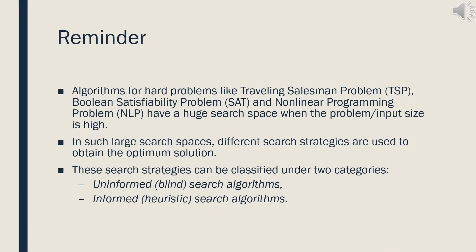Let's first remember what we have seen about heuristic algorithms. Algorithms for hard problems like the traveling salesman problem, Boolean satisfiability problem, and non-linear programming problem have a huge search space when the problem input size is high. In such large search spaces, different search strategies are used to find the optimum solution. These strategies can be classified under two categories: uninformed or blind search algorithms, and informed or heuristic search algorithms.